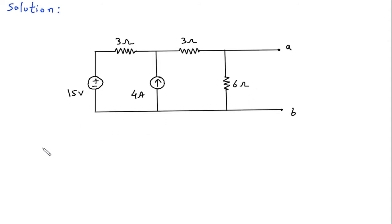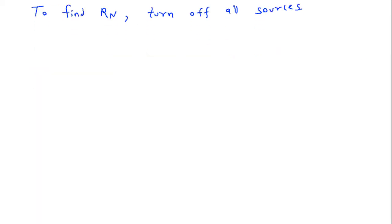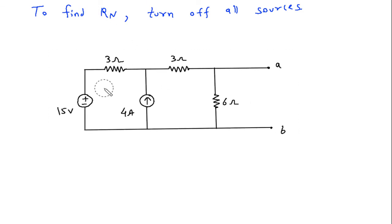Now we will find Rn. To find Rn, set or turn off all sources. So this is a voltage source, so this will be short circuited. This is a current source, so this will be open circuited. And this will be our Rn.